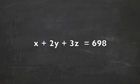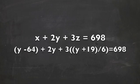Returning to our equation x plus 2y plus 3z equals 698, we can now substitute for x and z.